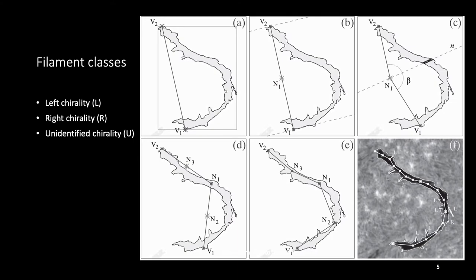But in case the difference between the number of left and the right barbs is not significant, that is the difference is less than 2, then the filament does not fall under the left or the right chirality. Rather, it is said to have unidentified chirality.